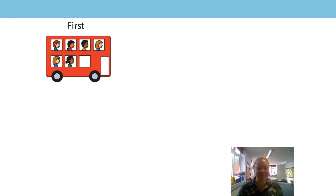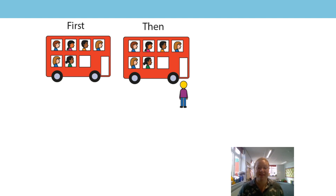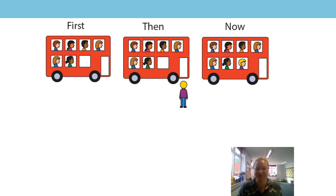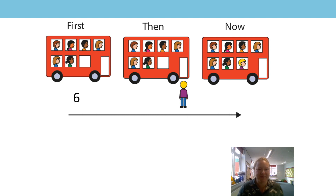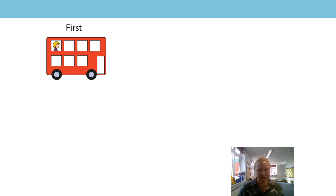Let's have a go with another example. What can you see on the bus? First, we have six children — you might have spotted that there's four on the top and two underneath, so altogether first we have six. Then one more child wants to get on. Now we have seven. So have a think — what are our addends and what is our sum? First, we have six children, then one more is added, now we have seven. Here is our equation. So let's try swapping those addends round in our story now.